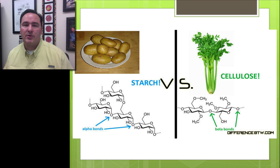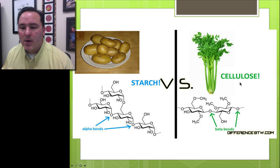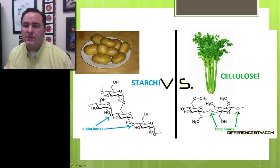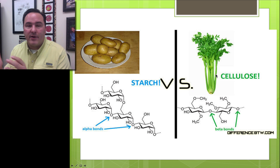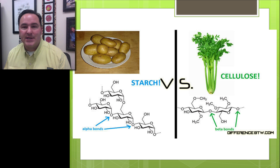Starches are able to give us energy over a longer period of time. The same is not true for cellulose — our bodies do not have the ability to break down cellulose. Things like celery and lettuce mostly never get digested; they simply move through the digestive system as fiber and roughage.